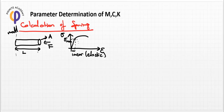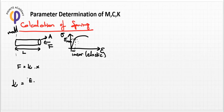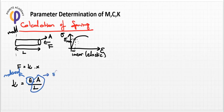As we know, the spring factor satisfies F = K·x, and we need to calculate this K value. For translational motion, K can be calculated as K = E·A / L, where E is the elastic modulus of the material, A is the cross-sectional area, and L is the length. E is related to material selection, while A and L are related to shape dimensions.